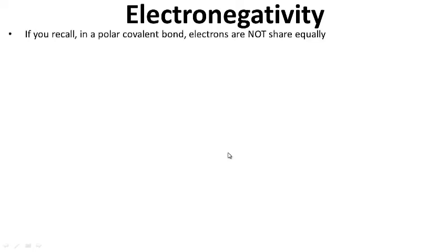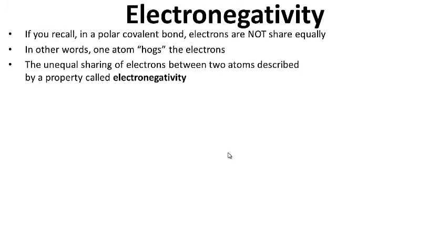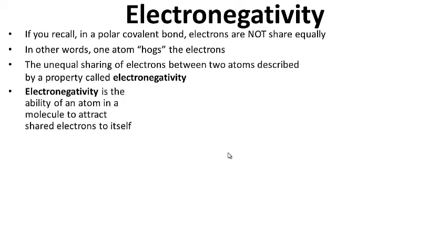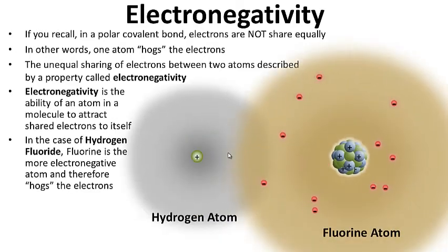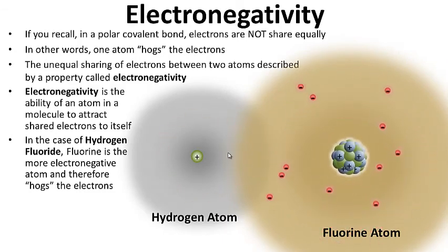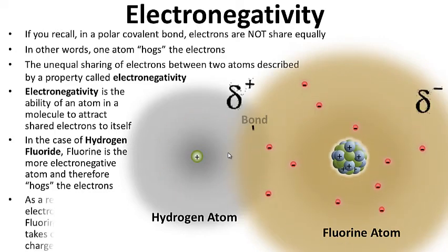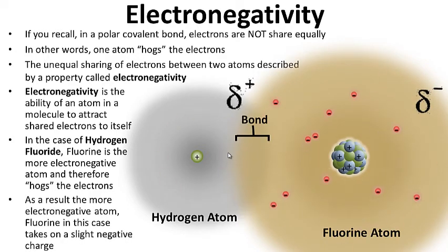Electronegativity: in a polar covalent bond, electrons are not shared equally — in other words, one atom hogs the electrons. The unequal sharing of electrons between two atoms is described by a property called electronegativity. Electronegativity is the ability of an atom in a molecule to attract shared electrons to itself. In the case of hydrogen fluoride, fluorine is more electronegative because it attracts or hogs all the electrons. As a result, the more electronegative atom — fluorine in this case — takes on a slight negative charge.